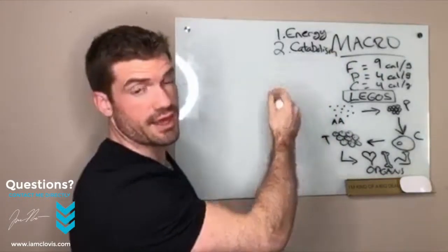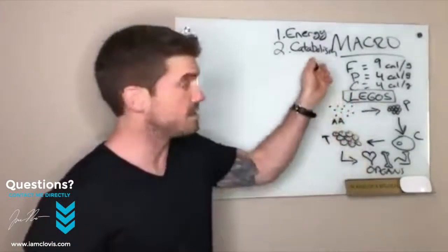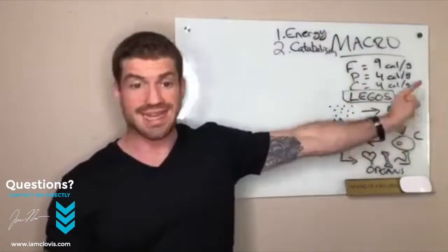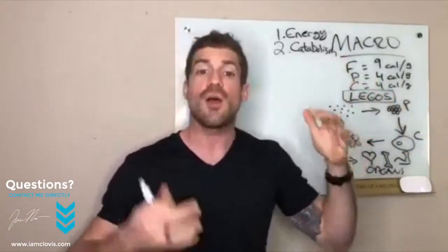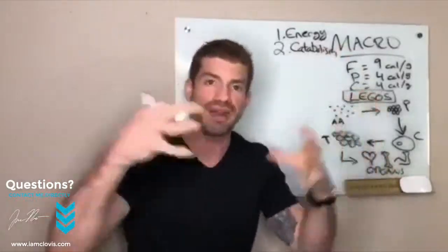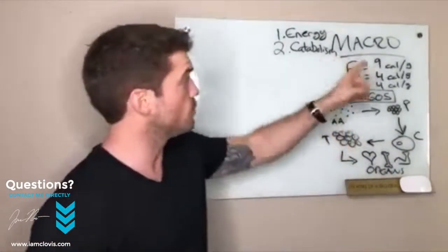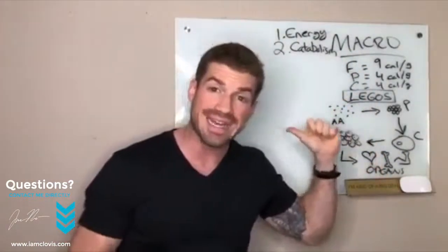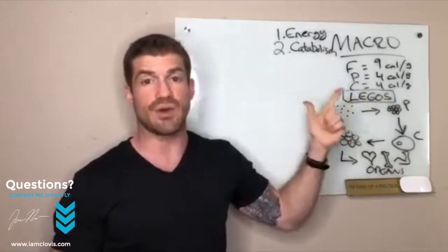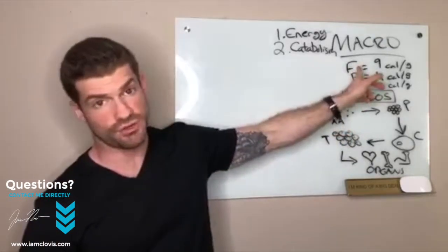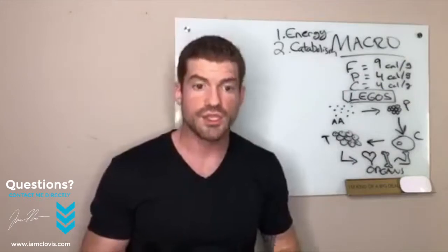Catabolism is literally breaking down foods into smaller molecules. Catabolism is converting macronutrients - it's taking fat, protein, and sugar (aka carbohydrates) and breaking them down into simpler structures. It's converting fat to fatty acids, protein to amino acids, and carbohydrates to glucose.